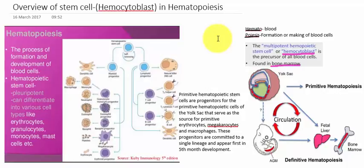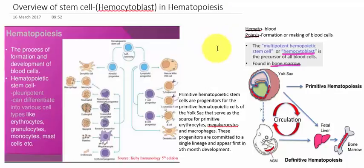The blood cells may be the RBC, the WBC, or the platelets. All types of blood cells are developed through the hematopoiesis process. The location where hematopoiesis occurs is generally in the bone marrow.